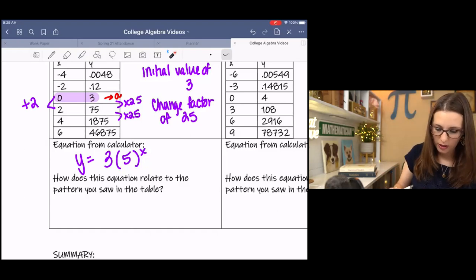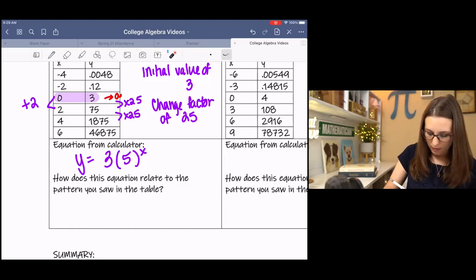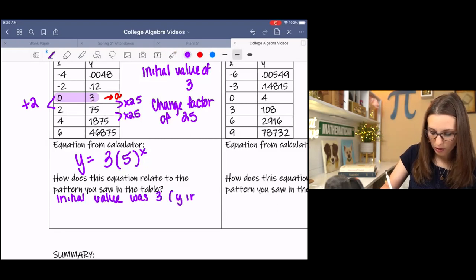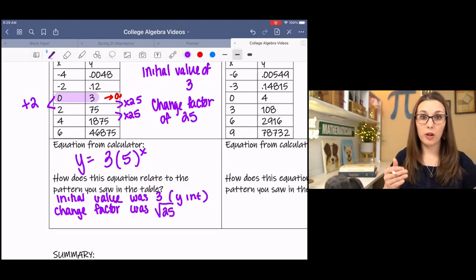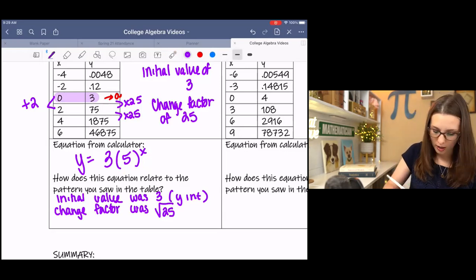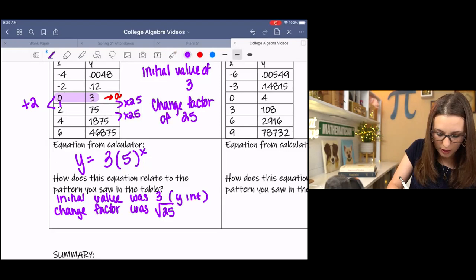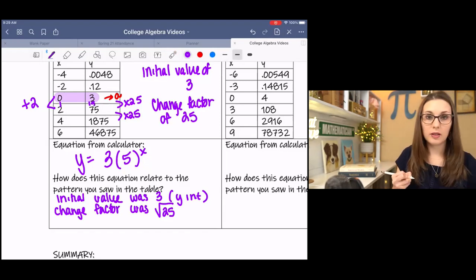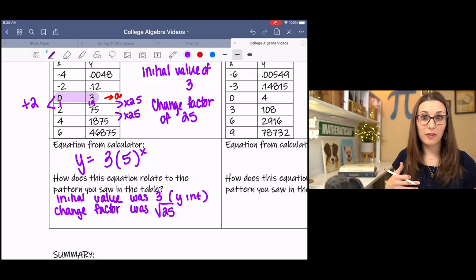So this equation relates because the initial value was 3. That's the y-intercept. And then the change factor was actually square root 25 because we went up by 2's. Pretty cool, right? So if I had put in a 1 right here, this would have been 15. And then 15 times 5 is 75. So now you can see where that 5 is coming from.